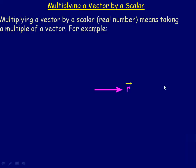In this lesson, we're going to take a look at multiplying a vector by a scalar. A scalar is a real number like 2, negative 5, the square root of 7, or 3 quarters. Those are all scalars, or real numbers.